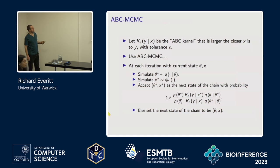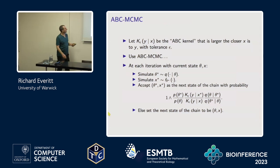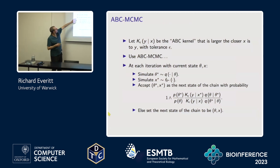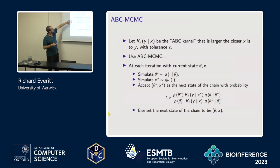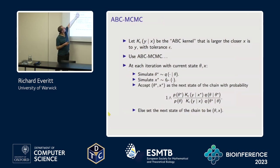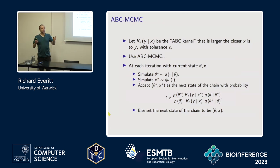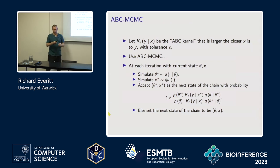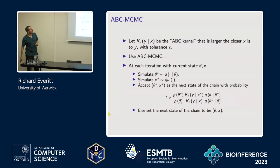The ABC MCMC algorithm, the analogue of the exact method I just talked about, would replace the evaluation of the likelihood with a step where we simulate from the model and then we have some kernel that gives good scores to cases where simulations from the model for a certain set of parameters look like the real data. That's ABC, as everyone in the room knows, and that's the MCMC version of the algorithm.